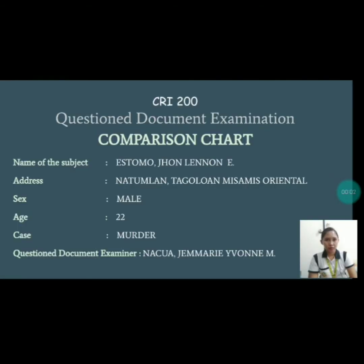These are the details of the subject. We have here the name of the subject: Istomo John Lennon E., his address at Natumlan Tagulwan Misamis Oriental, sex male, age of 22 years old, and case of murder.